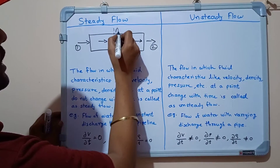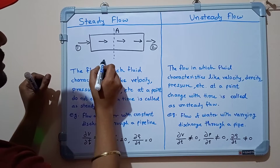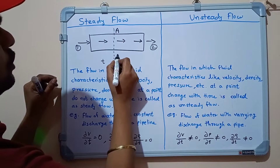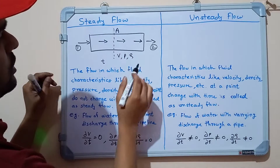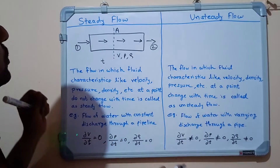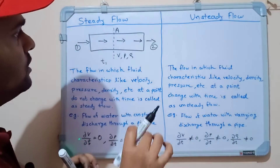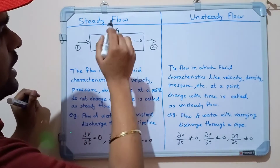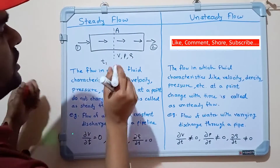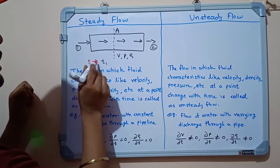Suppose this is a point — point A — on this pipeline. At this point, at time t, there will be some fluid characteristics like velocity, pressure, and density. When this time changes — suppose now the time is t1 — the fluid characteristics at point A remain the same: velocity V, pressure P, and density rho.